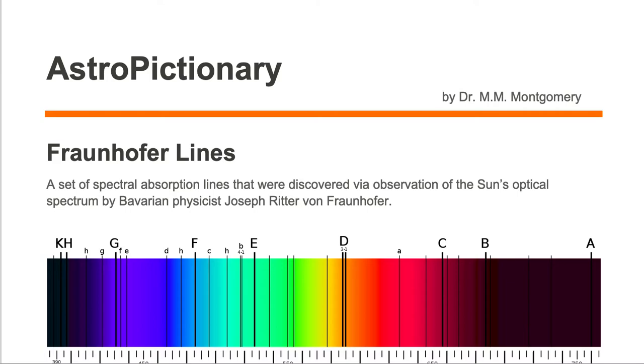Fraunhofer lines are a set of spectral absorption lines that were discovered via observation of the sun's optical spectrum by Bavarian physicist Joseph Ritter von Fraunhofer.